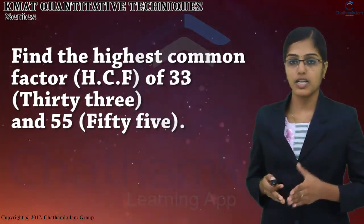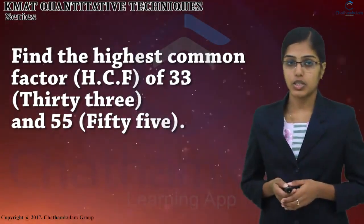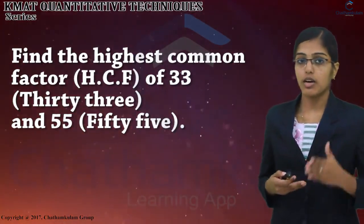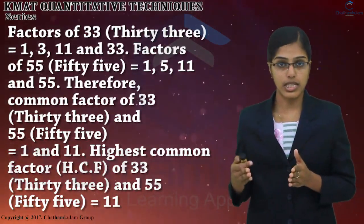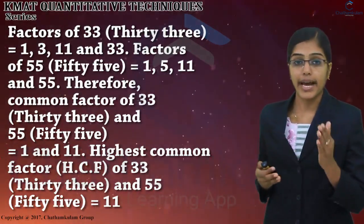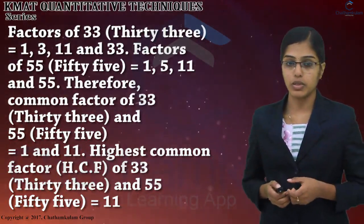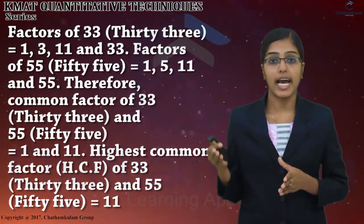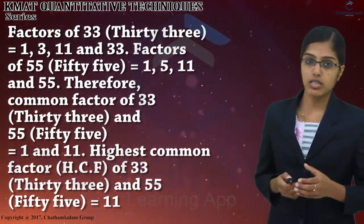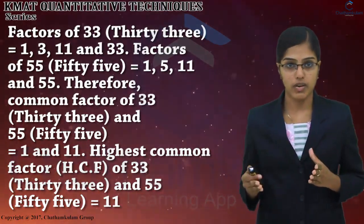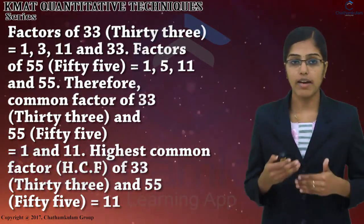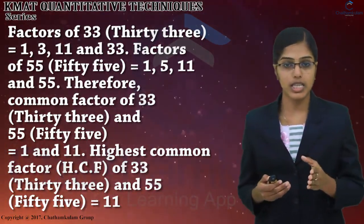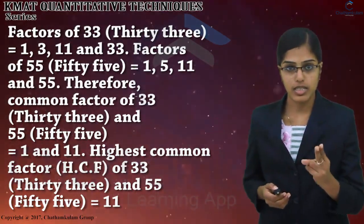Our next example: find the highest common factor of 33 and 55. Factors of 33 are 1, 3, 11, and 33. Factors of 55 are 1, 5, 11, and 55. Therefore, common factors of 33 and 55 are 1 and 11. The highest common factor of 33 and 55 is 11.